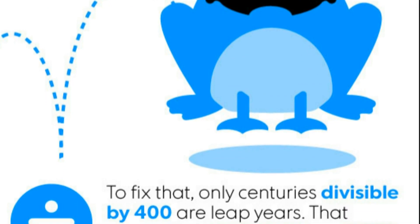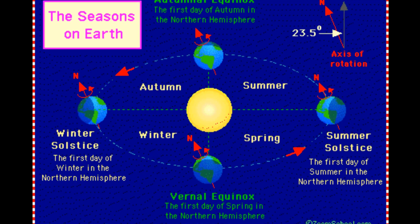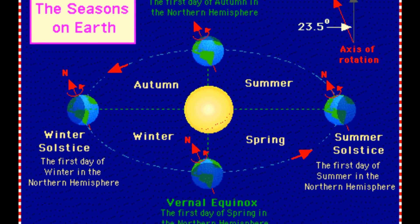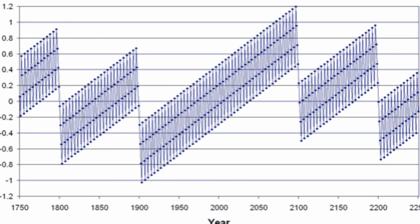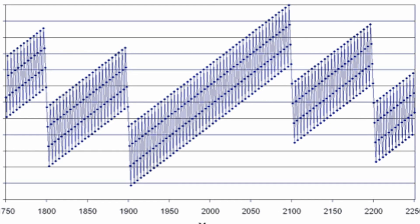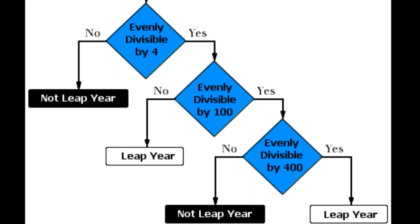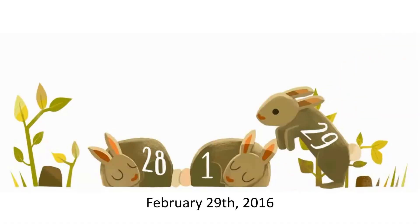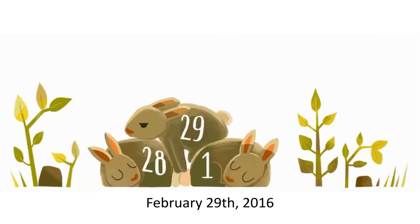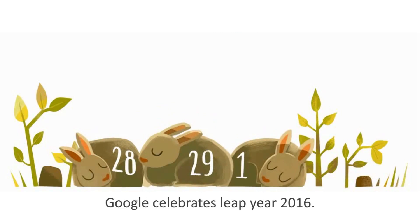Technically, a leap year isn't every four years. The year 2000 was a leap year, but the years 1700, 1800, and 1900 were not. There's a leap year every year that is divisible by four, except for years that are both divisible by 100 and not divisible by 400. This added rule about centuries versus just every four years was an additional fix to make up for the fact that an extra day every four years is too much of a correction.